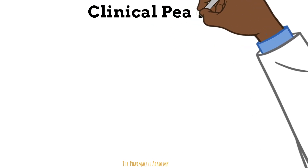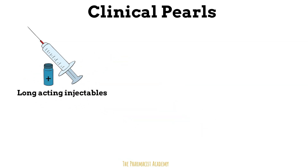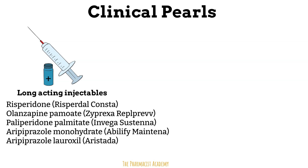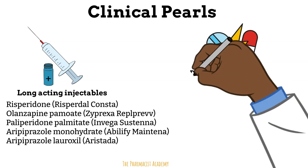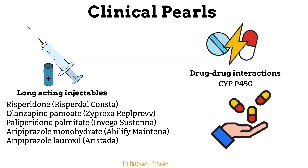Before I bring the video to an end, let's go over some clinical pearls of second generation antipsychotics. Clinical pearls are concise, practical pieces of information. For patients with poor adherence, long-acting injectable formulations offer a solution to improve compliance and maintain steady blood levels — these agents have different brand names than the oral forms, and the frequency of administration can range from two to eight weeks depending on the agent. Second, drug-drug interactions: these agents have significant interactions, so it is important to always check before initiation. Lastly, tapering and discontinuation: when discontinuing a second generation antipsychotic, it is important to taper gradually to avoid withdrawal symptoms or rebound effects. Do not stop these agents abruptly, as this can lead to discontinuation syndrome presenting as irritability and agitation.